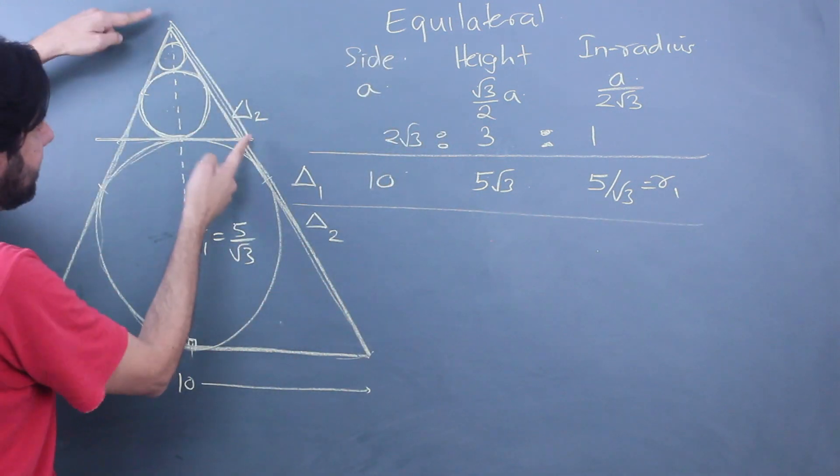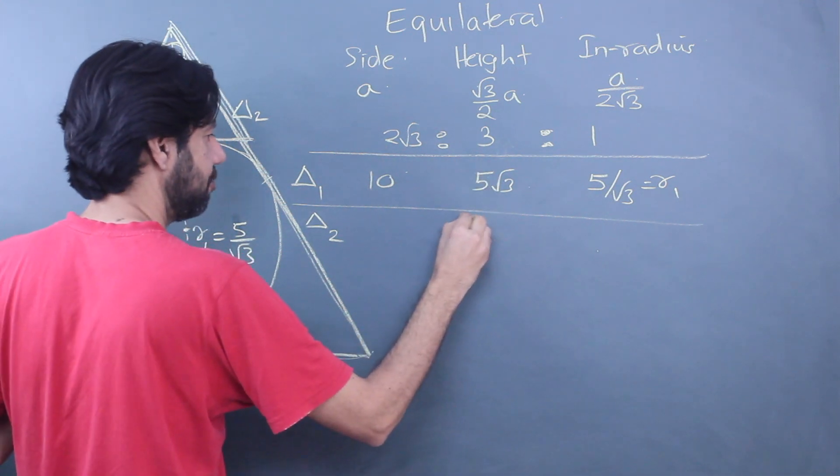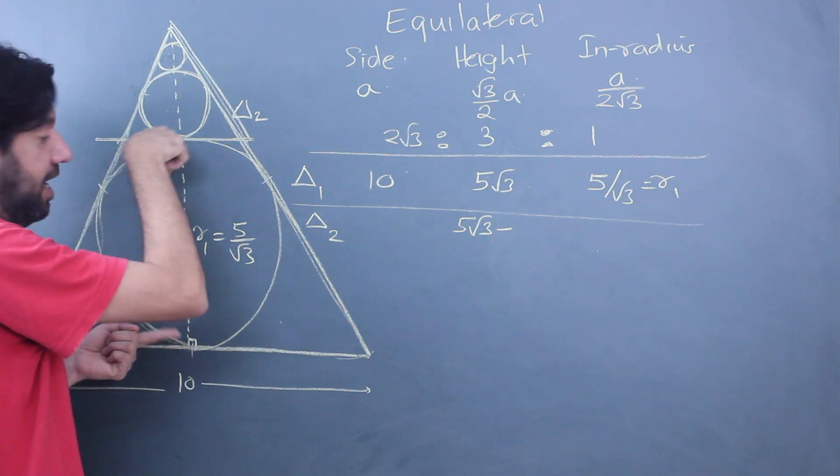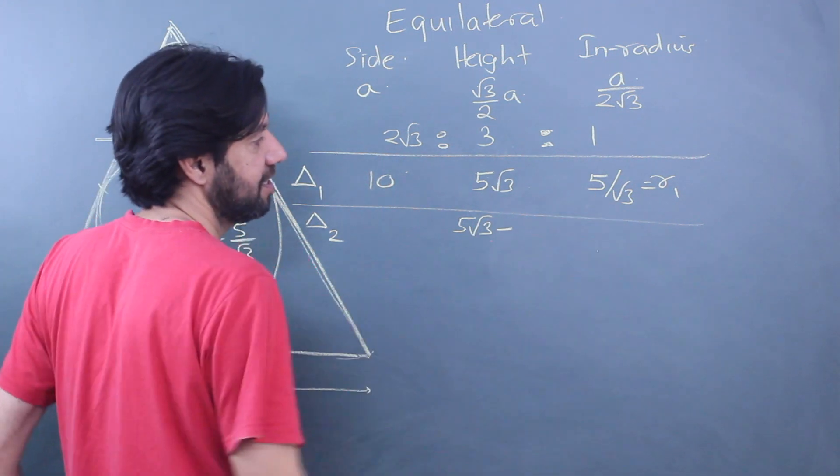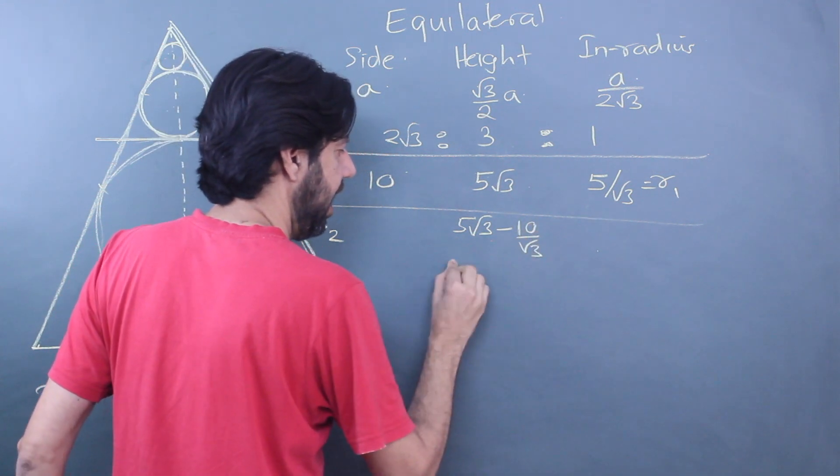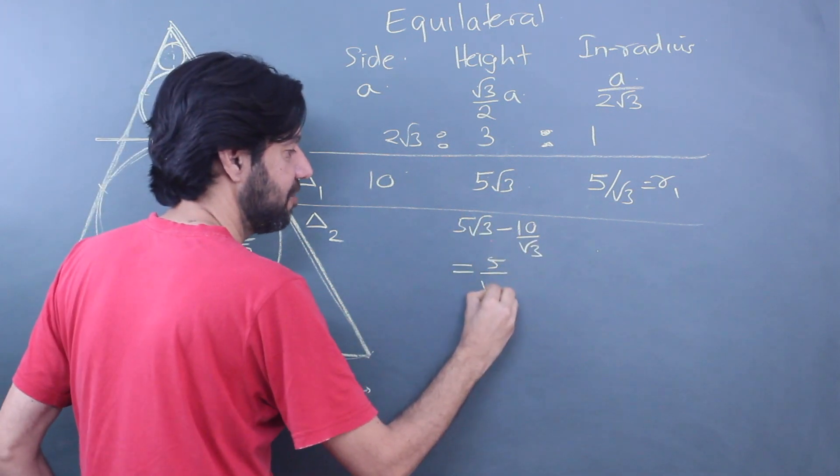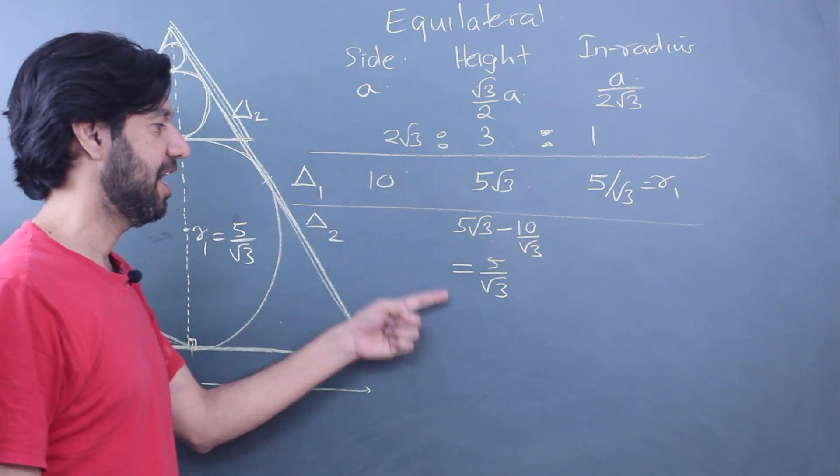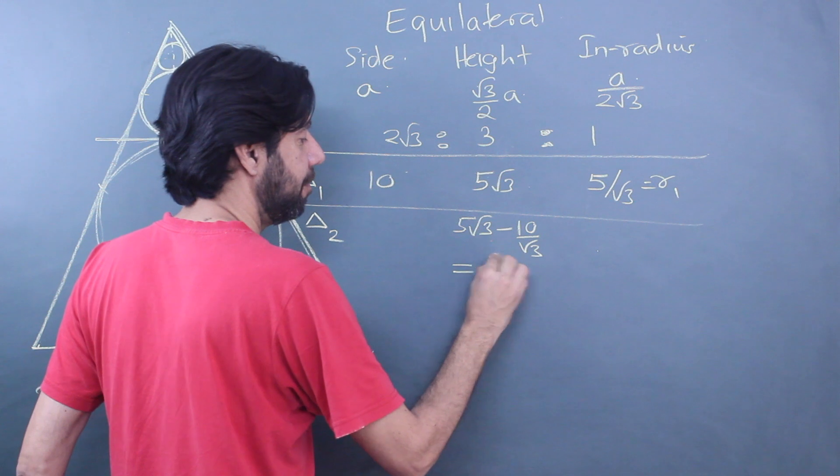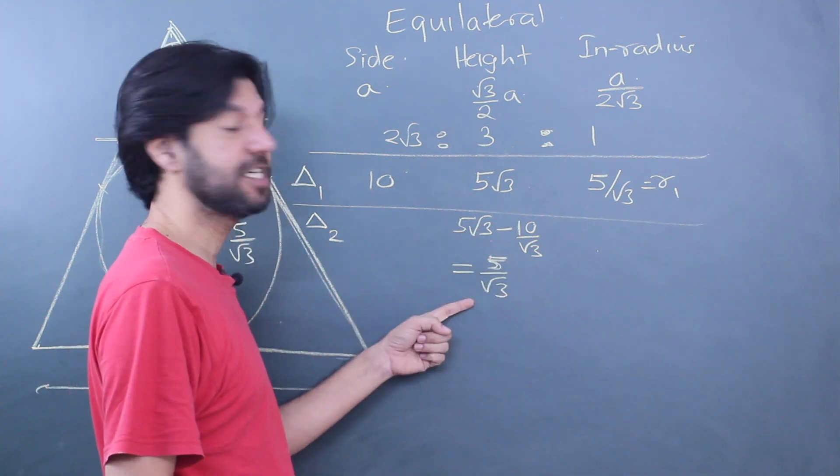What is the height? Let's find the height. The height is going to be 5√3 minus the diameter. And what is the diameter? The diameter is twice of this, that is 10/√3. Simplifying: (15 - 10)/√3 = 5/√3. And now I have seen this relation also.